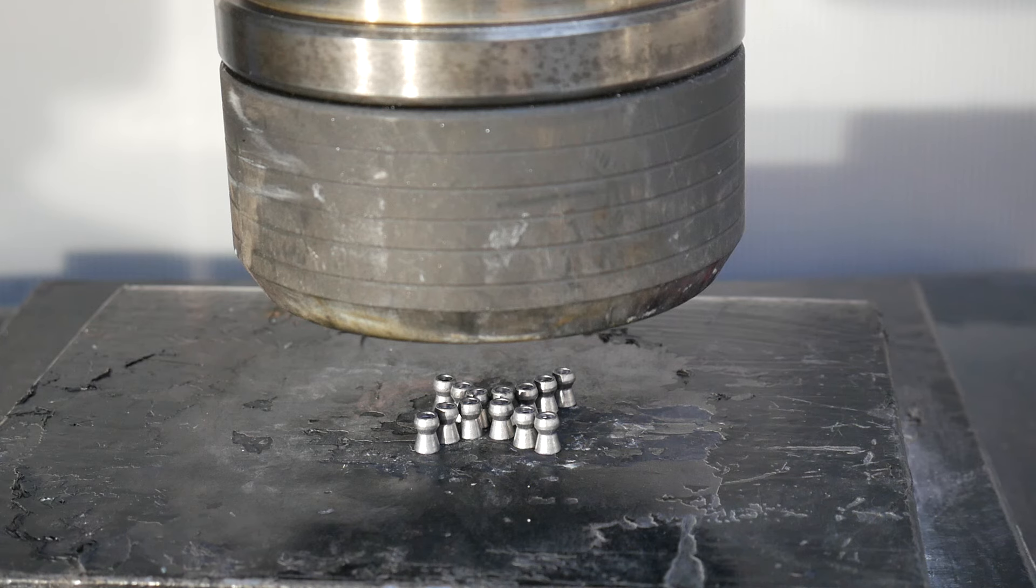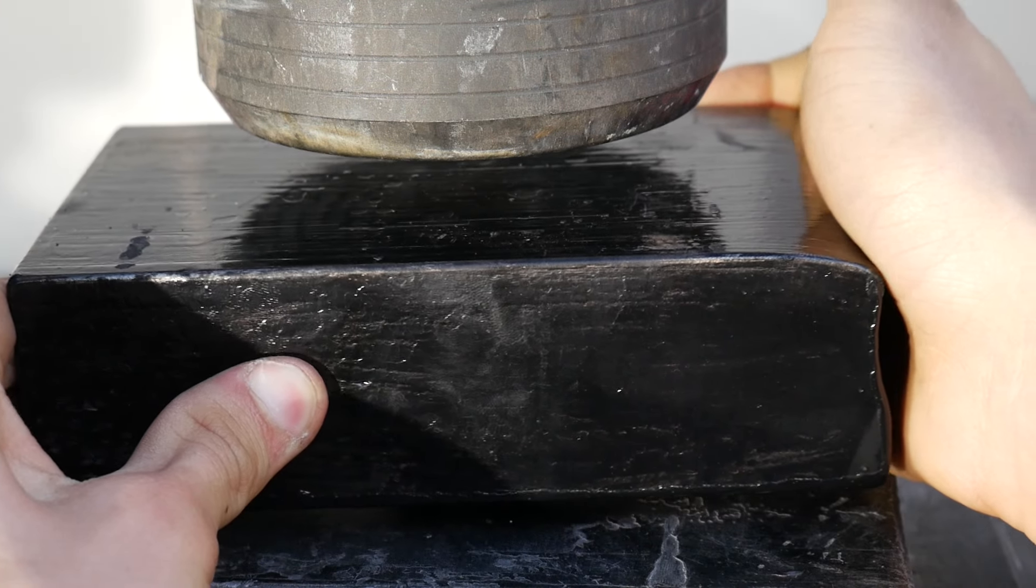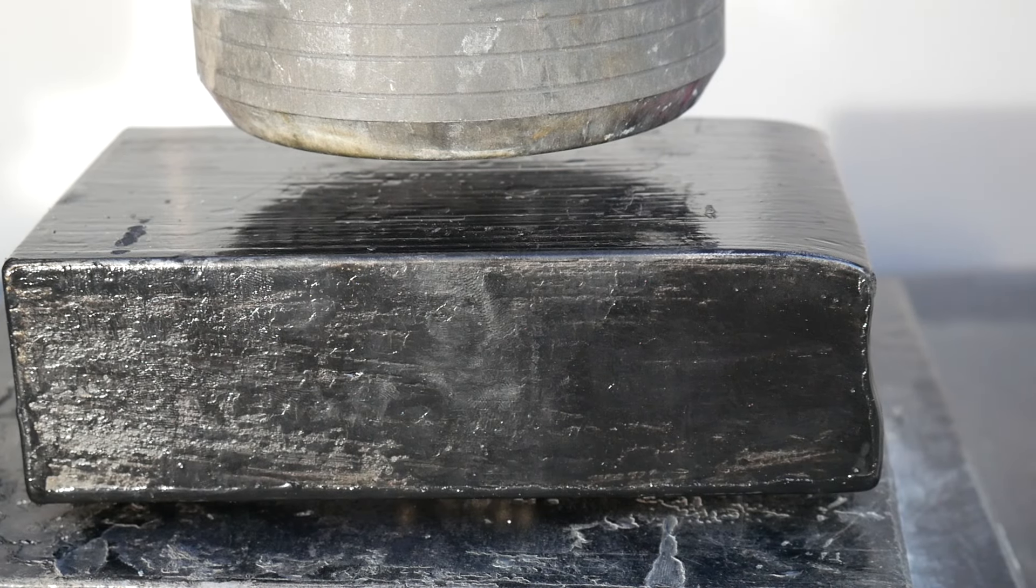Hi there and welcome to Crush It. Here we have a couple of .22 hollow point air rifle pellets. You can put a block over it so it'll be a neater crush. Let's see how it goes.